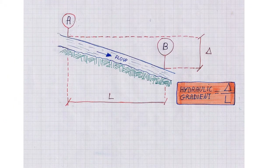With reference to this figure, I now introduce the concept of hydraulic gradient applied to a river. Here we have a vertical section of a river; in green there is the riverbed. The hydraulic gradient is the ratio between the difference of altitude between two points A and B, and the length between A and B.